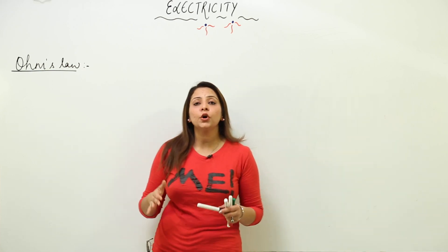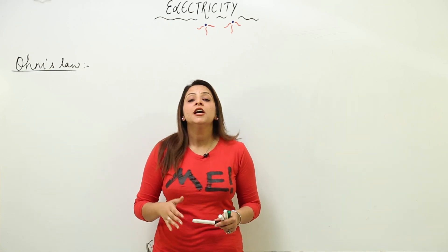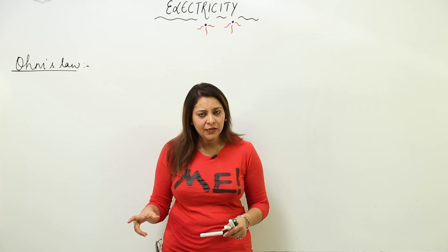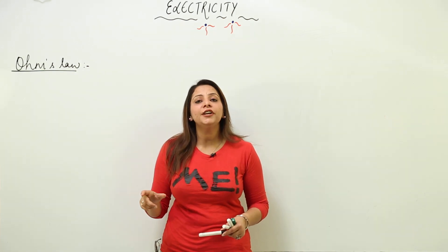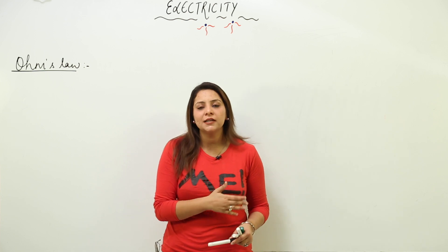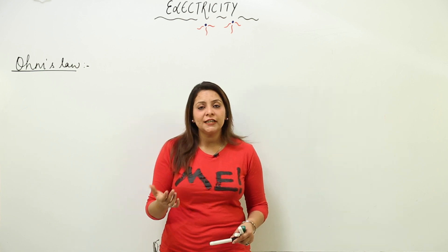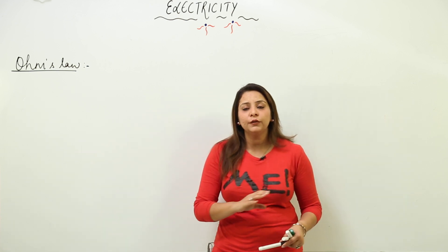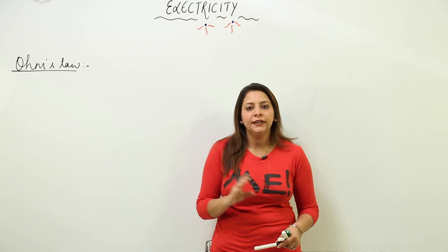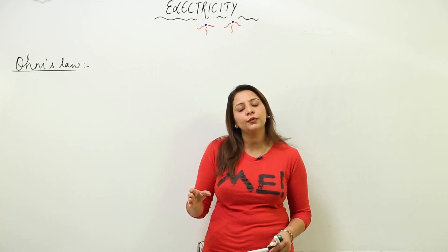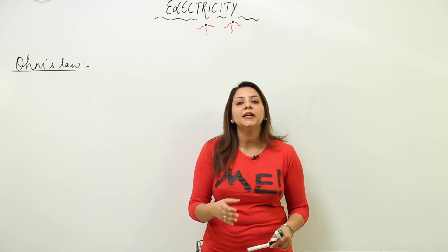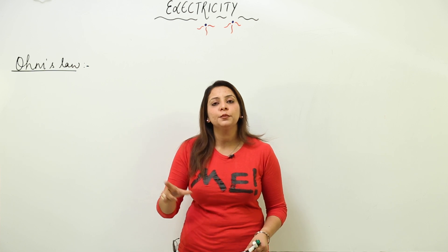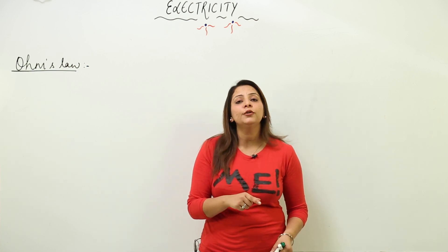For a continuous flow of current in a circuit, we need to maintain a potential difference. That is why we introduce a battery or cell into a circuit, as discussed in the previous lecture. A battery has two terminals that always have a potential difference — one is at high potential and the other at low potential. This need for potential difference led to the formulation of Ohm's Law.